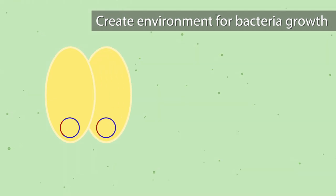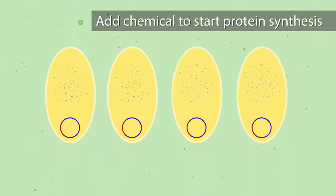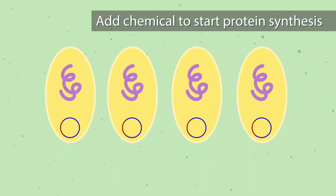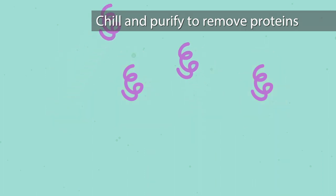We let them grow and grow and grow, and then we use a specific chemical that we add in that tells them, okay, make our protein out. They make our protein, and then once there's enough of the bacteria we chill them so they stop growing, and we purify them so we can get our protein out and make sure that there's nothing else in there.